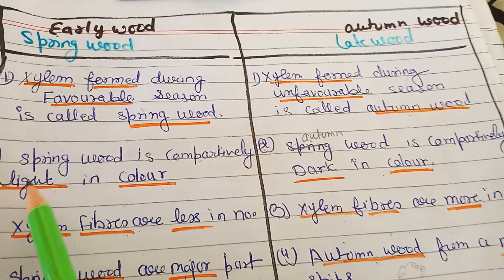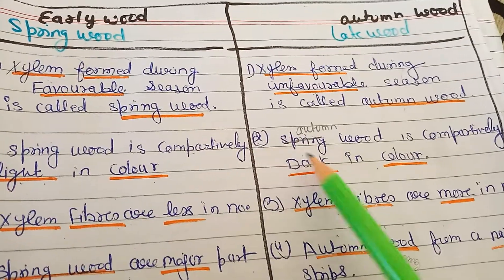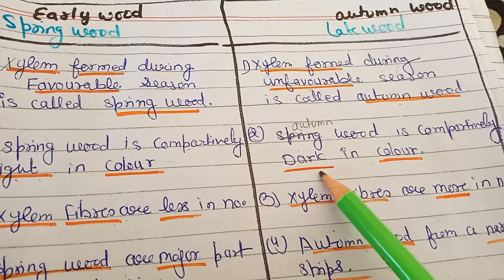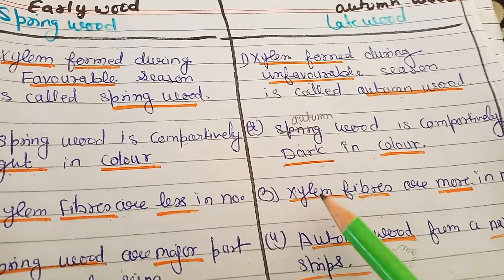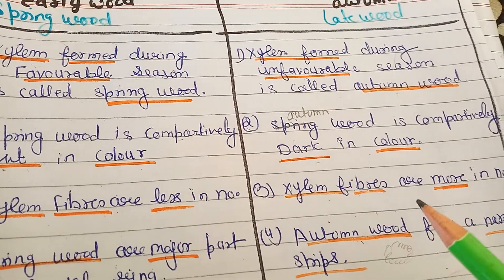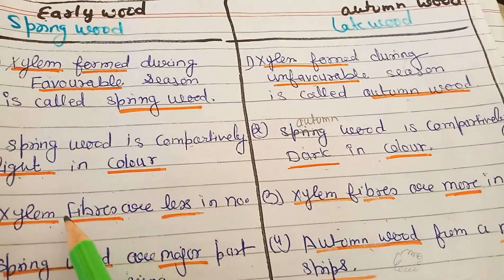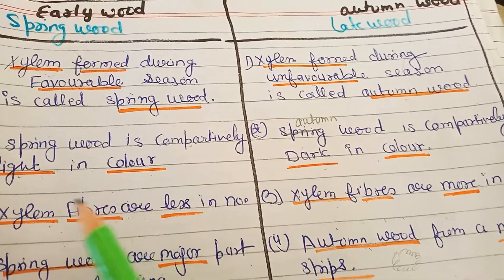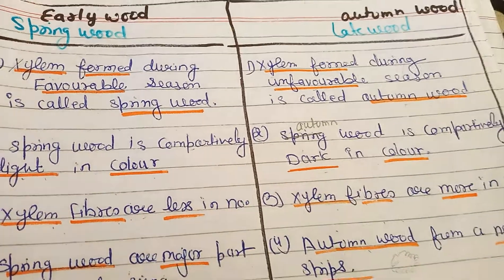Spring wood is comparatively lighter in color, and autumn wood is darker in color. Xylem fibers are more in number in spring wood, while xylem fibers are less in number in autumn wood.